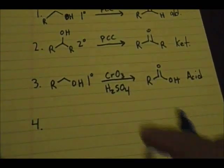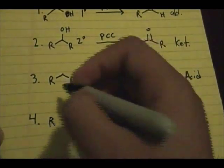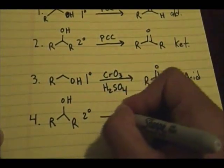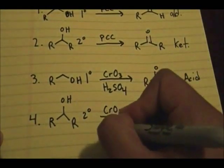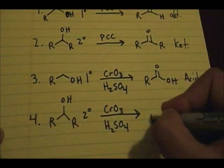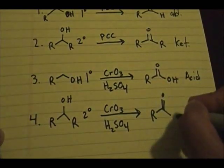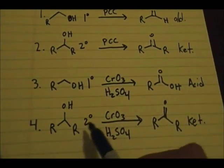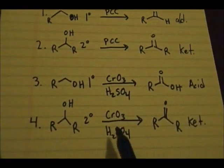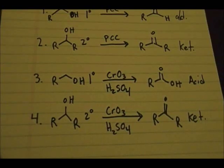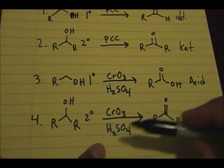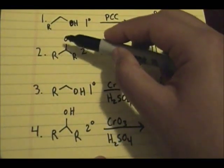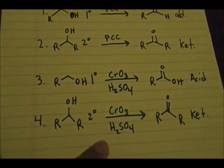And finally, if you have a secondary alcohol and use CrO3 and H2SO4, you generate a ketone. So there are two ways to generate a ketone from a secondary alcohol as your starting material: you can use PCC or the CrO3/H2SO4 reagent. The way I think about forming the ketone is the same — form a double bond between this C and this O, get rid of that H and that H, and that gives you your ketone.